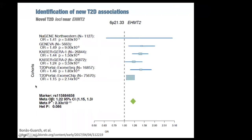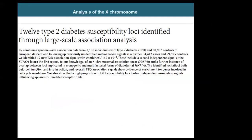This low-frequency variant is shown in detail. In general, low-frequency variants are very hard to identify and require very large sample sizes. This variant had a frequency just below 5%, but its odds ratio was considerably higher than many common variants being identified in larger meta-analyses.